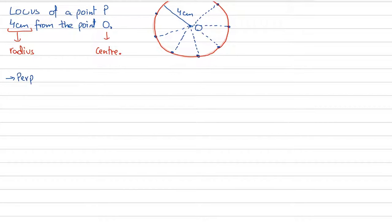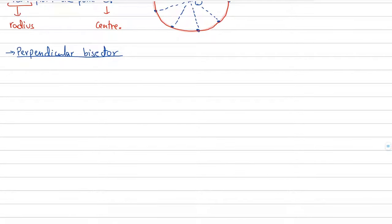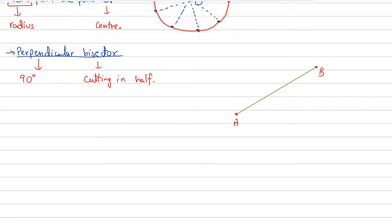The next locus is a perpendicular bisector. I have a separate video on how to construct one, so I strongly suggest you watch that. Breaking the term down: perpendicular means making a 90-degree angle, and bisector means cutting in half.